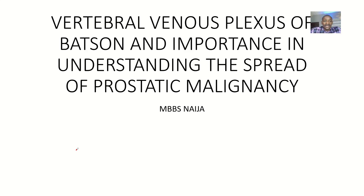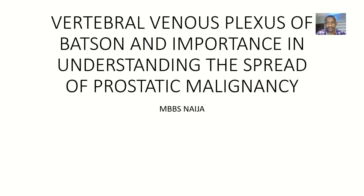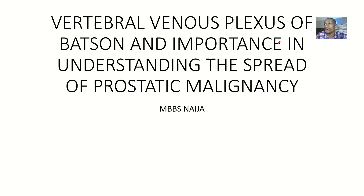Let's briefly talk about the vertebral venous plexus of Batson and the importance of this venous plexus in understanding the spread of prostatic malignancy. This was another way that this question was twisted in the exam, because normally they usually just say 'the vertebral venous plexus of Batson and its importance in the spread of disease generally.' This time they give you a particular disease.